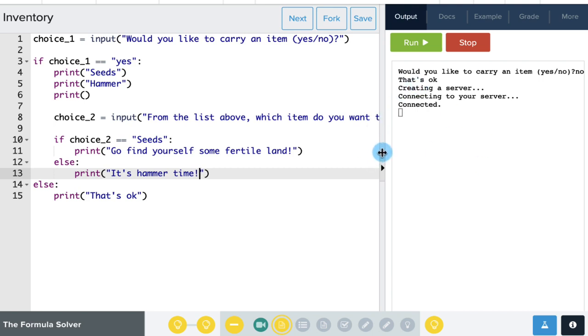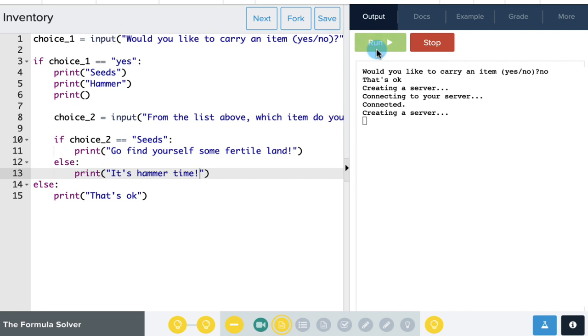Cool. So now let's rerun our program to see all of this working. Would you like to carry an item? Yes. Okay, it prints seed and hammer. From the list above, which item do you want to carry? Let's try seeds. Go find yourself some fertile land.